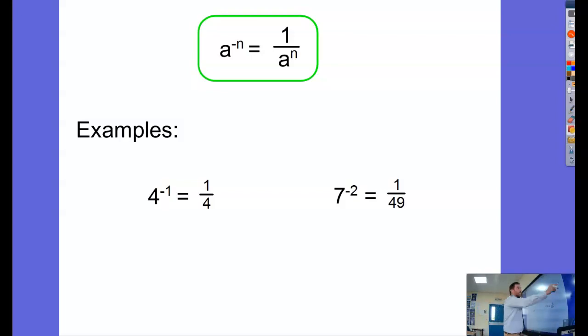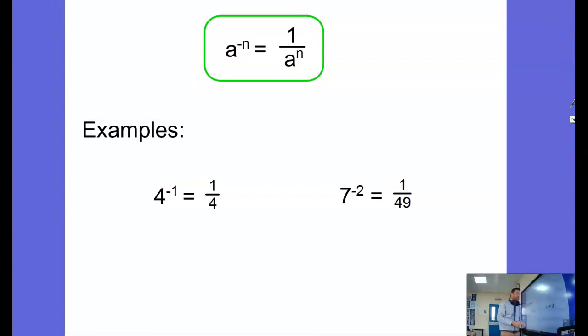With this second example here, if we've got 7 to the power of negative 2, the negative means 1 over, and then 7 squared is 49.